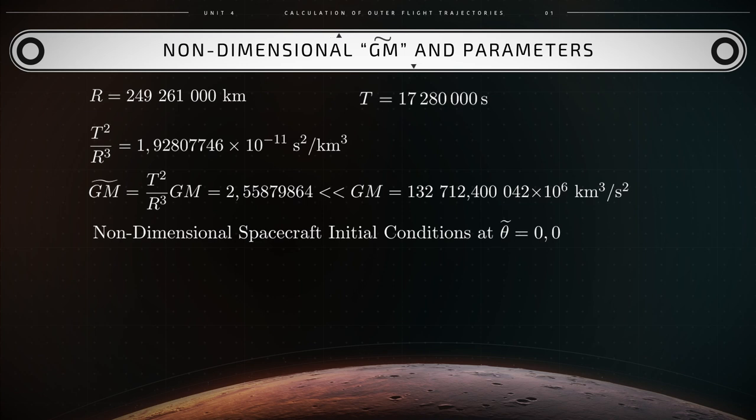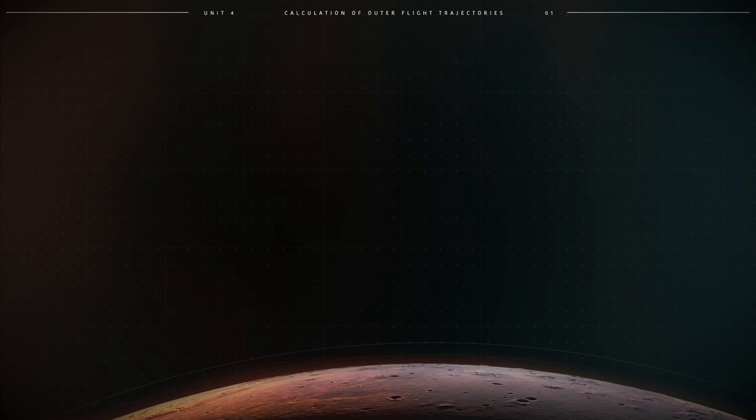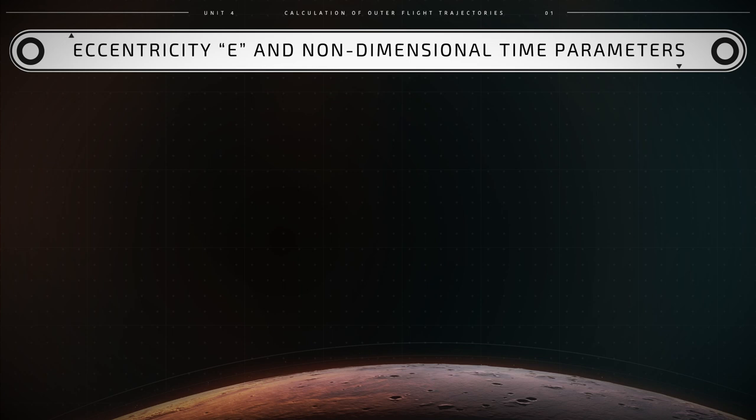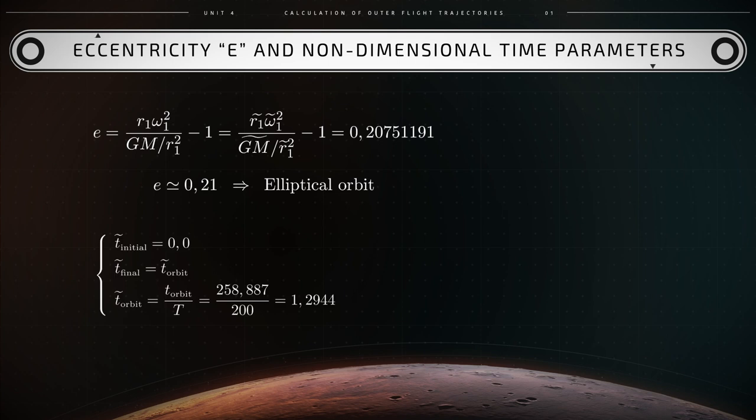From this process, the non-dimensional initial conditions are found to be equal to the following numbers. The total non-dimensional time for the flight from Earth to Mars is then calculated as follows. T tilde, the non-dimensional time equals T dimensional over the reference time capital T. That is the ratio of 258.8865024 days over 200 days, which equals 1.294.